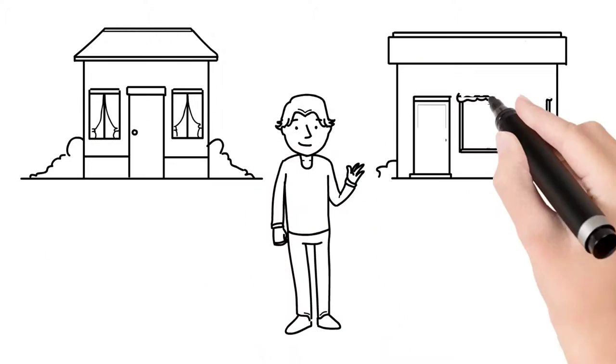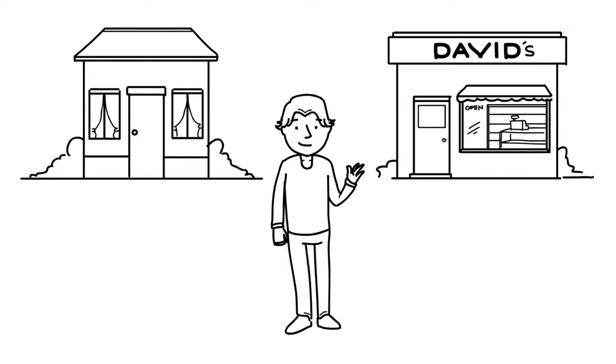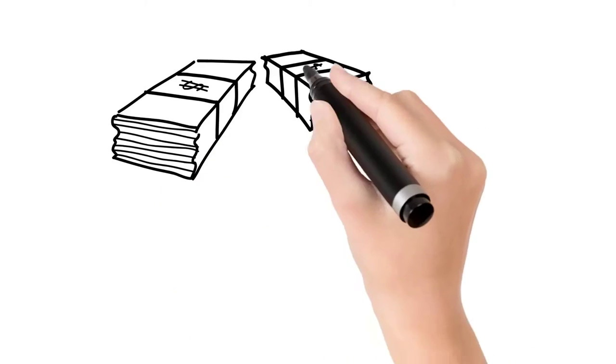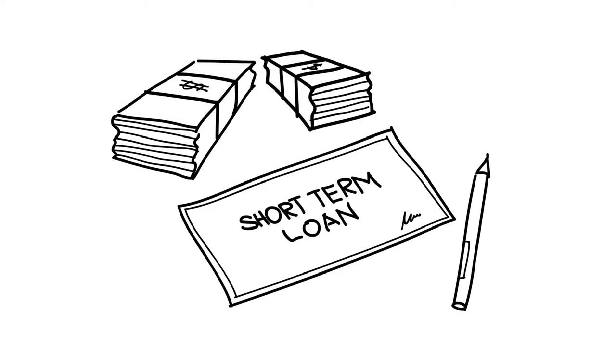This is David. David is a homeowner and operates a small business in Melbourne. He is looking for a short-term business loan from a reputable lender.